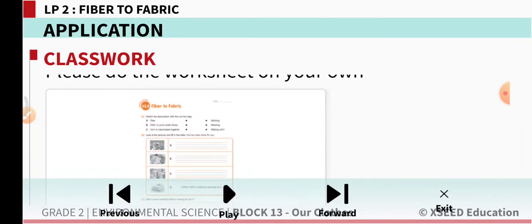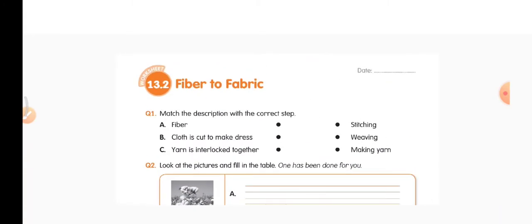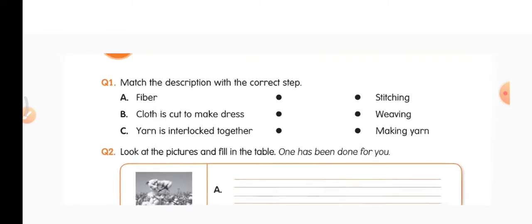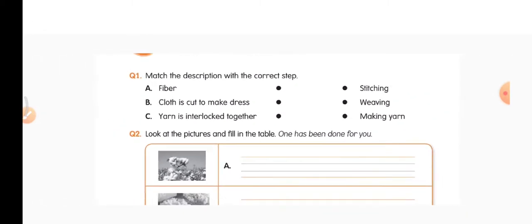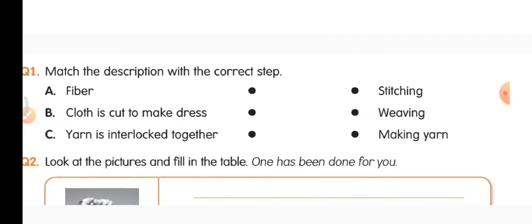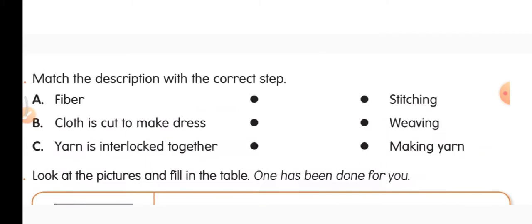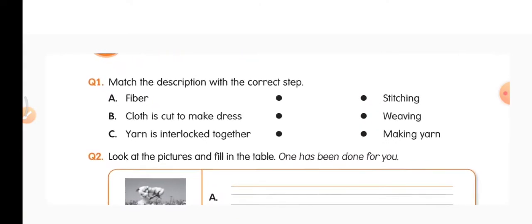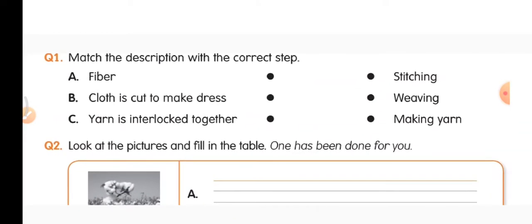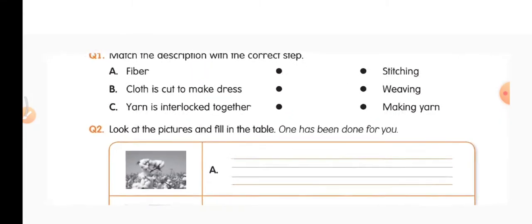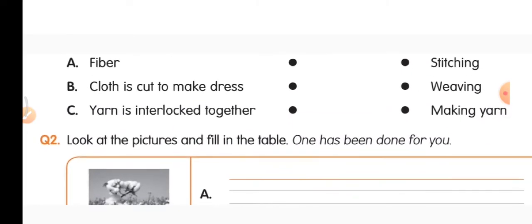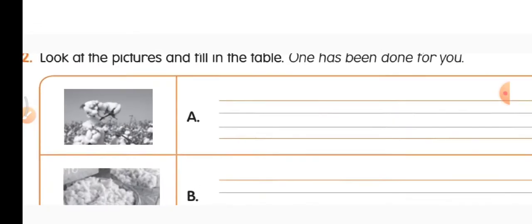Now open your worksheet and put today's date — 13.2 Fiber to Fabric. Question one: match the description with the correct step. Fiber is used to make yarn — match it with 'making yarn.' Cloth is cut to make a dress — match it with 'stitching.' Yarn is interlocked together — match it with 'weaving.'